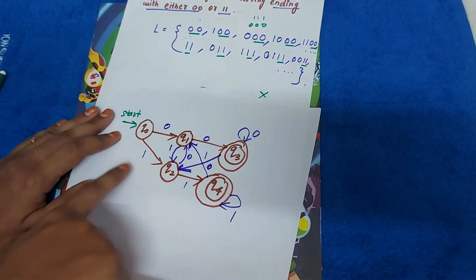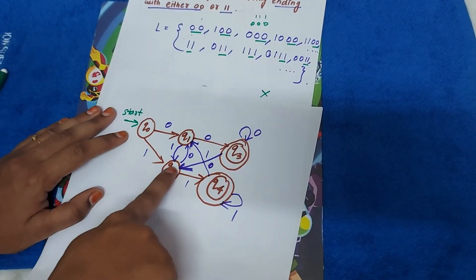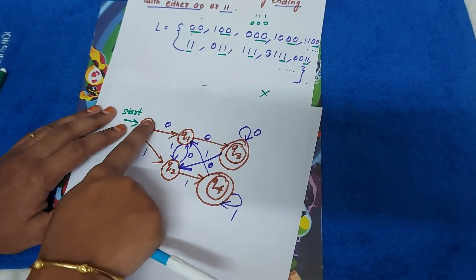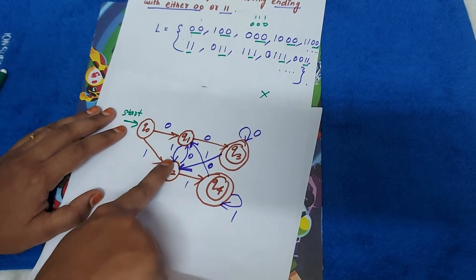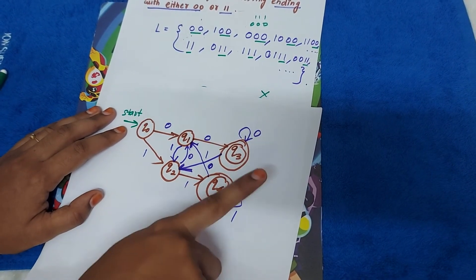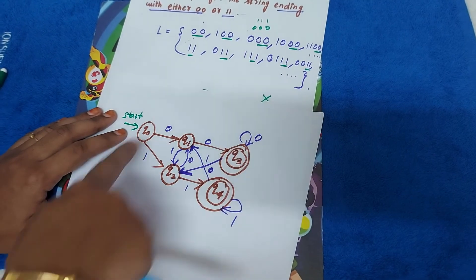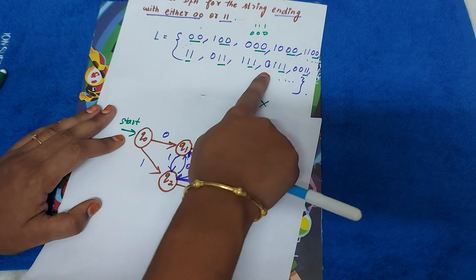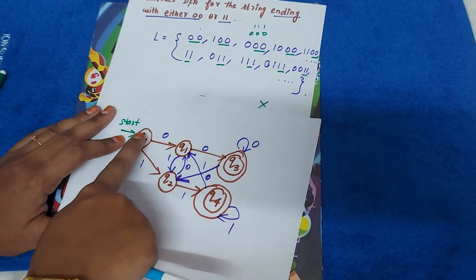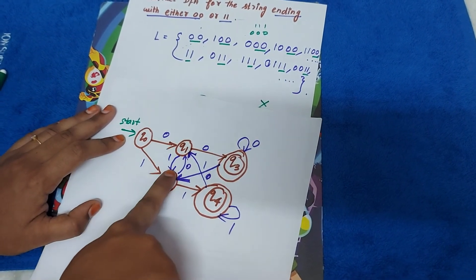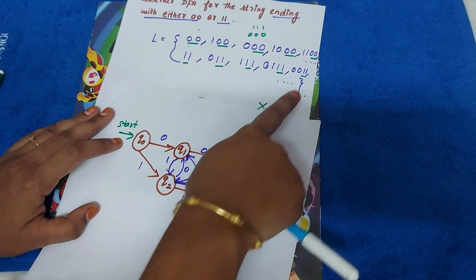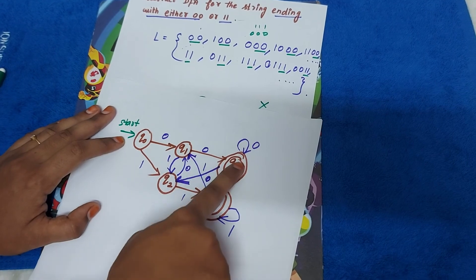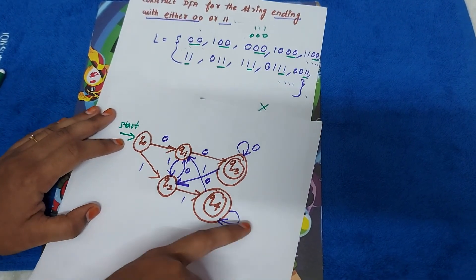One-one: see one, one — yes it is accepted. Zero-one-one: check zero, one, one — yes it is accepted. One-one-one: one, one, then one — yes it is accepted. Zero-one-one-one: zero, one, one, one — yes it is accepted. Zero-zero-one-one: zero, zero, one, one — yes it is accepted.